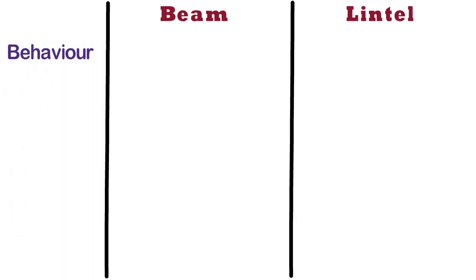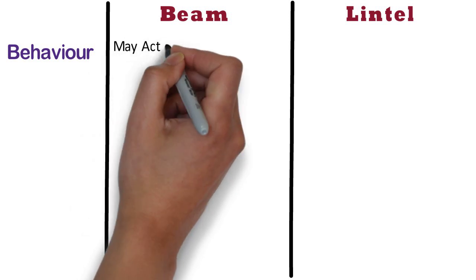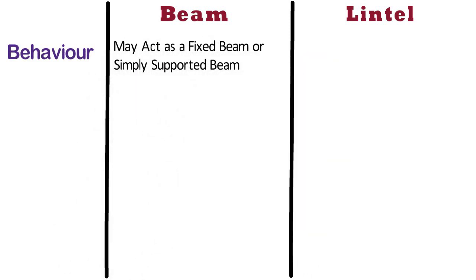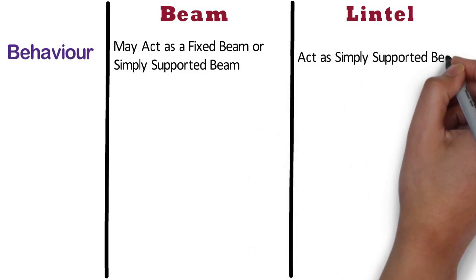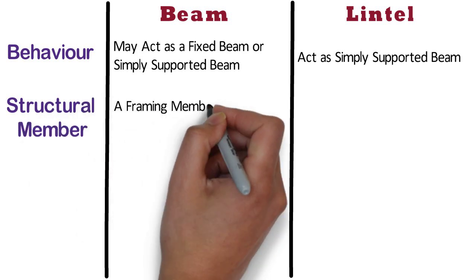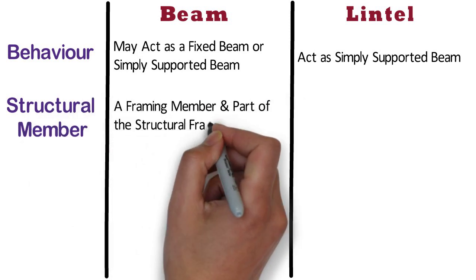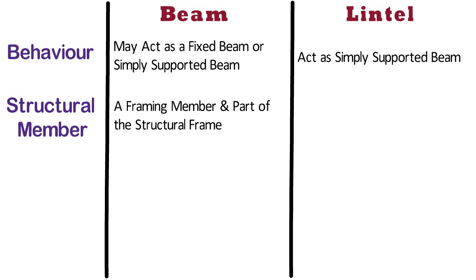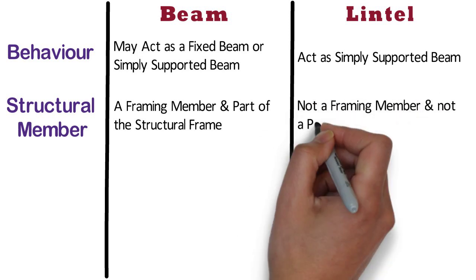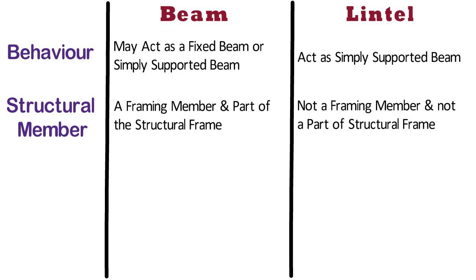Behavior. Beam may act as a fixed beam or simply supported beam based on support conditions. Whereas, lintel generally acts as a simply supported beam. Structural member: beam is a framing member and part of the structural frame. Whereas, lintel is not a framing member and not a part of the structural frame.